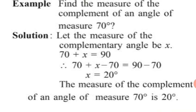Now let us solve this equation. We want the value of x. We subtract 70 from both sides: 70 plus x minus 70 equals 90 minus 70. The 70 gets eliminated on the left side, leaving x equals 90 minus 70, which equals 20. Therefore, the measure of the complement of an angle of measure 70 degrees is 20 degrees.